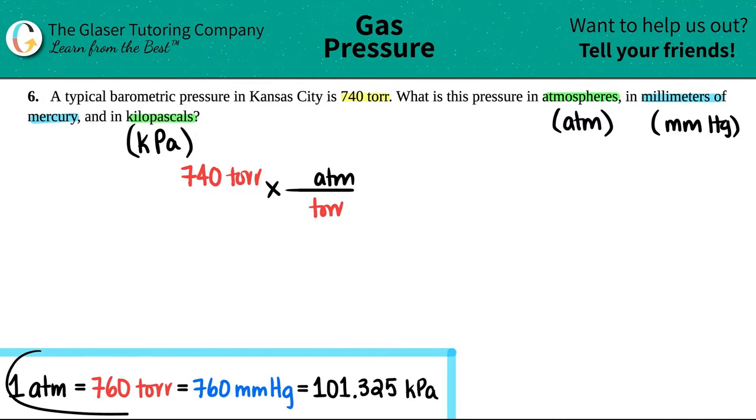And now I just wrote down what the four major pressure units are equivalent to. So atm, Torr, millimeters of mercury, and kilopascals. All you have to do is just pick the units that you're working with because they're all equal to each other.